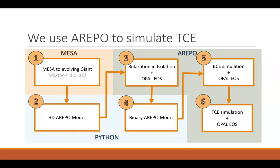The workflow is similar to before, but instead of AMUSE and Gadget-2, we use the AREPO code, which is a moving mesh code. It allows much better resolution in places where we actually need it — not where most of the mass is, but where the companion or the tertiary is located, where the gas density is very low. We also included the OPAL equation of state instead of the ideal gas equation of state, which allows us to account for recombination effects and potentially eject more material from the system.